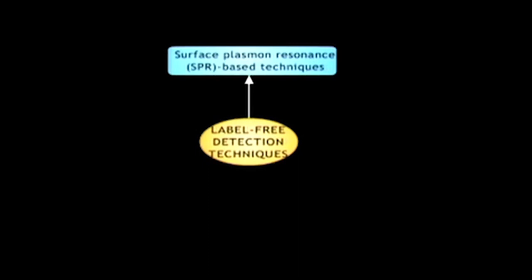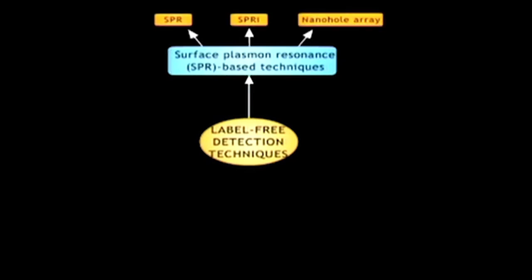Let us first talk about surface plasma resonance based techniques. First is SPR, surface plasmon resonance, which detects any change in refractive index of material at the interface between the metal surface and the ambient medium. Second, SPRI or surface plasmon resonance imaging, where images reflected by the polarized light at fixed angles are detected. Third, nano hole arrays, where light transmission of a specific wavelength is enhanced by coupling of surface plasmons on both sides of the metal surface with periodic nano holes.